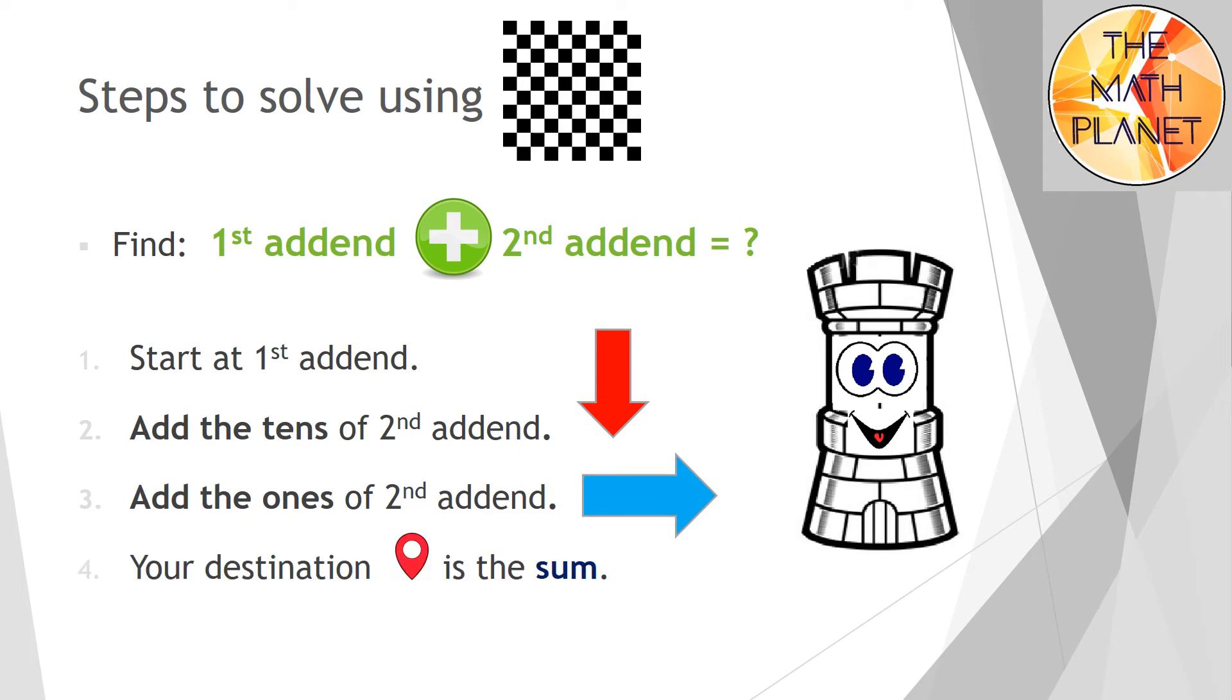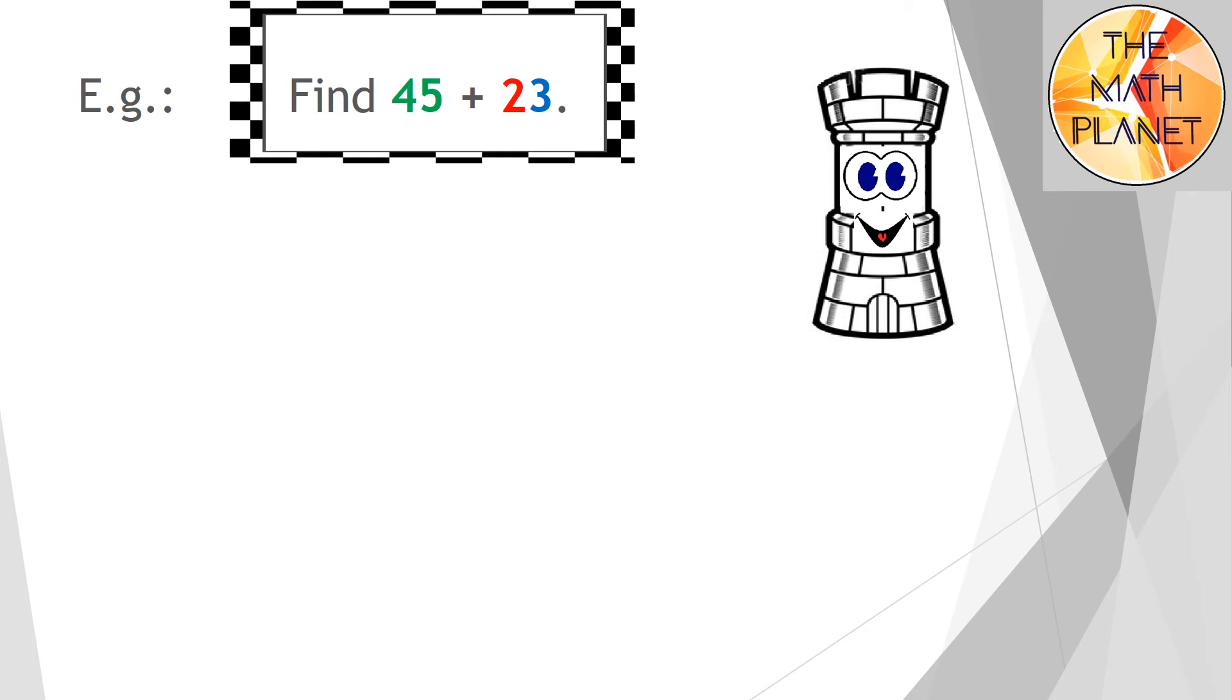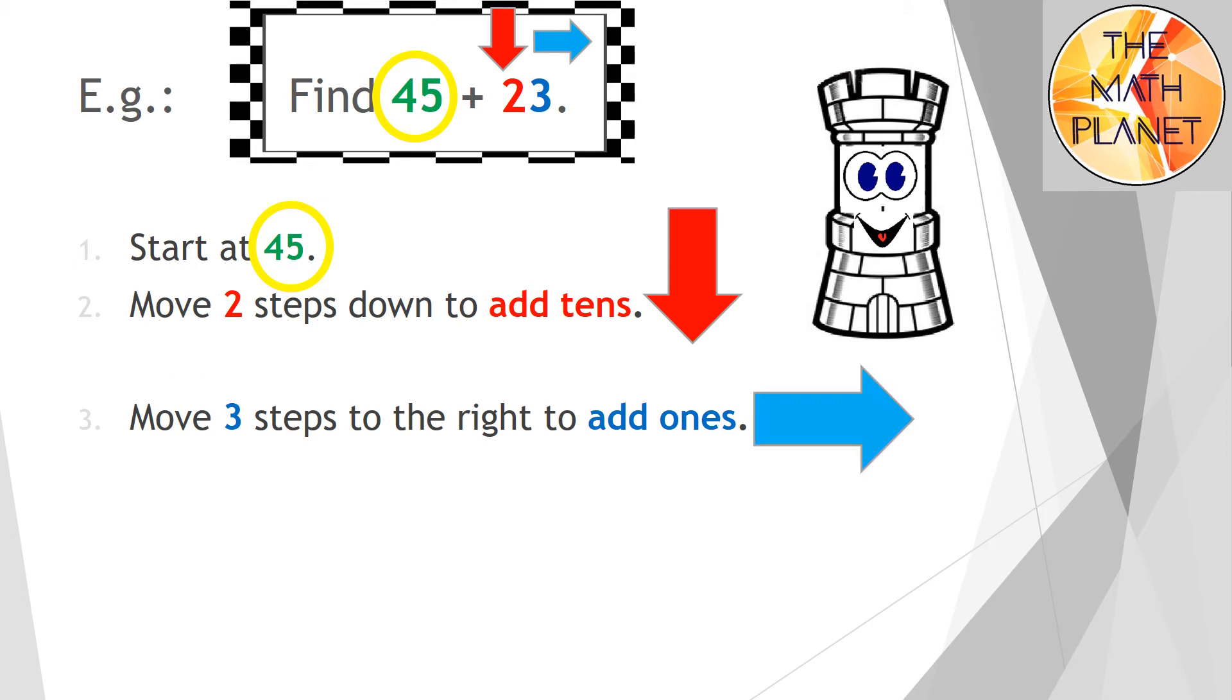For example, if we need to find 45 plus 23, I'll start at 45. Then I'll move two steps down to add two tens. I'll move three steps to the right to add three ones. And the destination will be the sum.